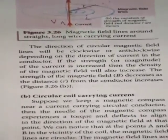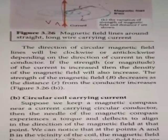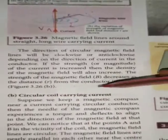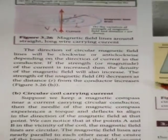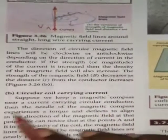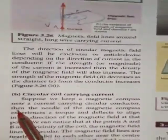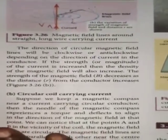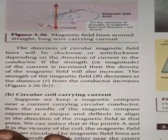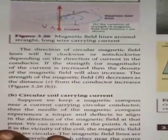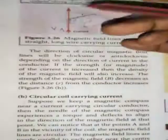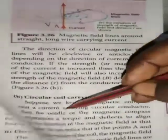Now suppose we keep a magnetic compass near a circular current carrying conductor. With one circular conductor and one magnetic compass box, the same phenomenon occurs — the same principle applies. The magnetic compass needle experiences a torque and deflects to align in the direction of the magnetic field at that point.